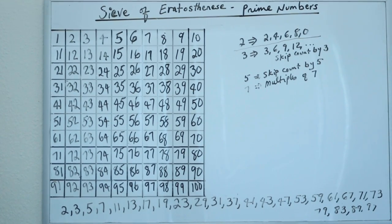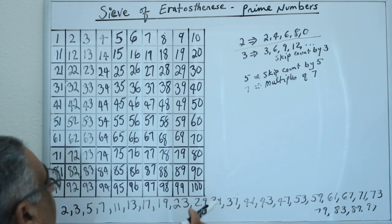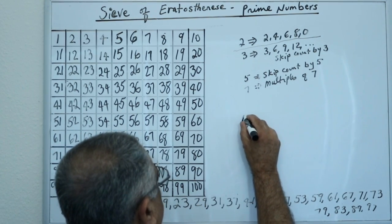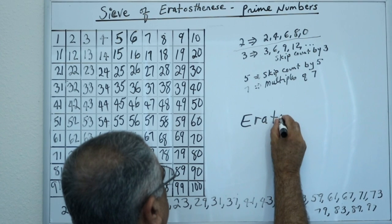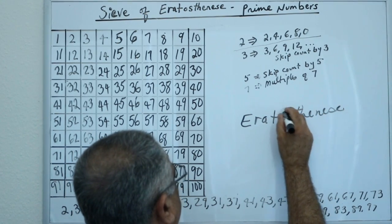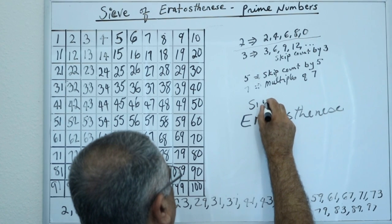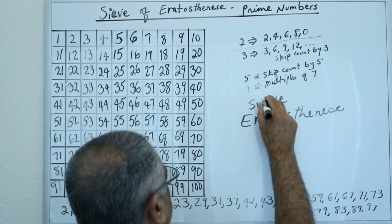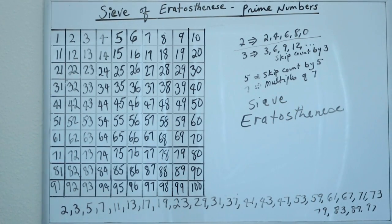This video is on prime numbers. How do we find prime numbers? I'm using an algorithm or method developed by Eratosthenes. It's known as the Sieve of Eratosthenes. You can find prime numbers up to 100 or as big as you want to, and it's by process of elimination.